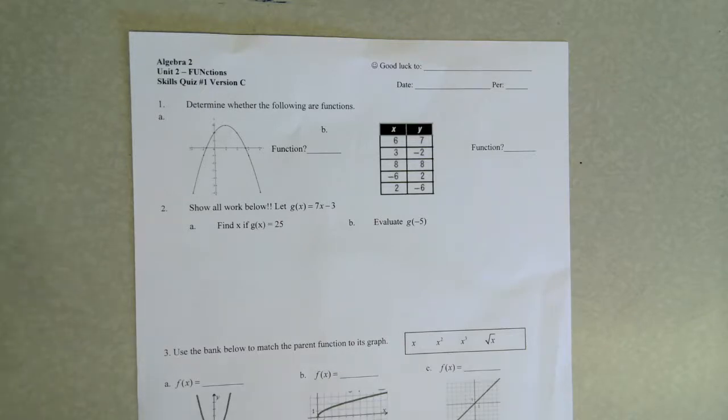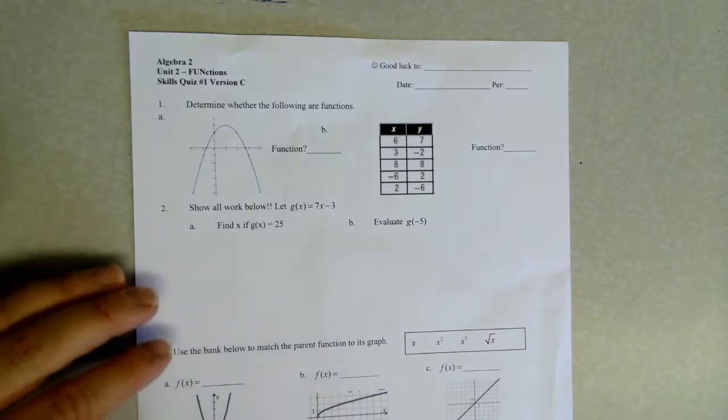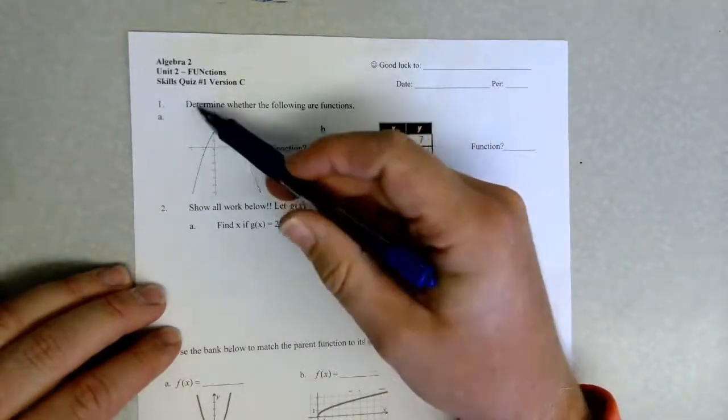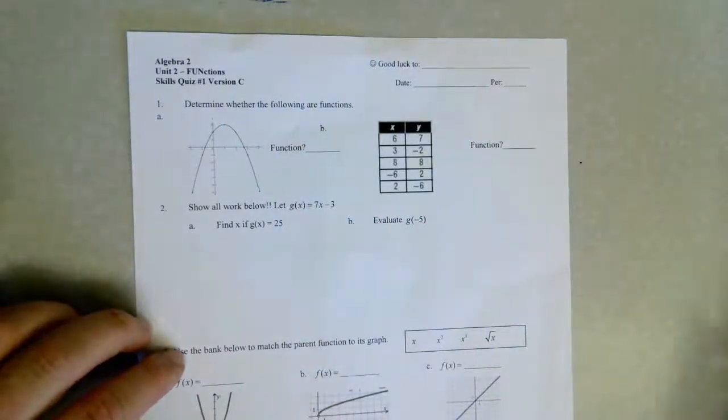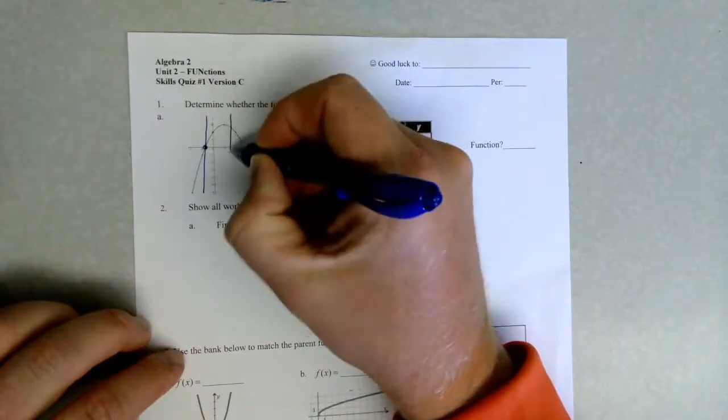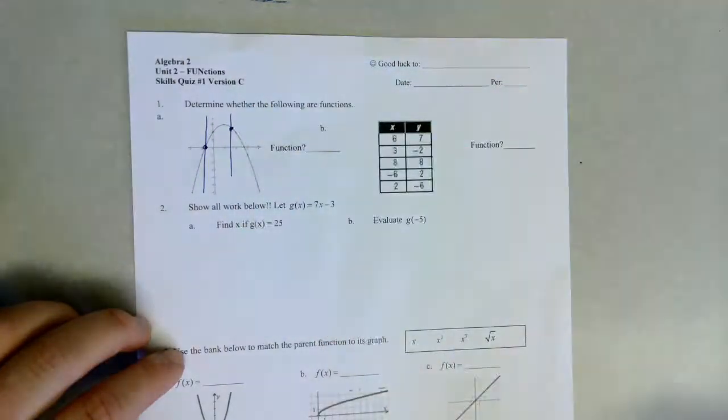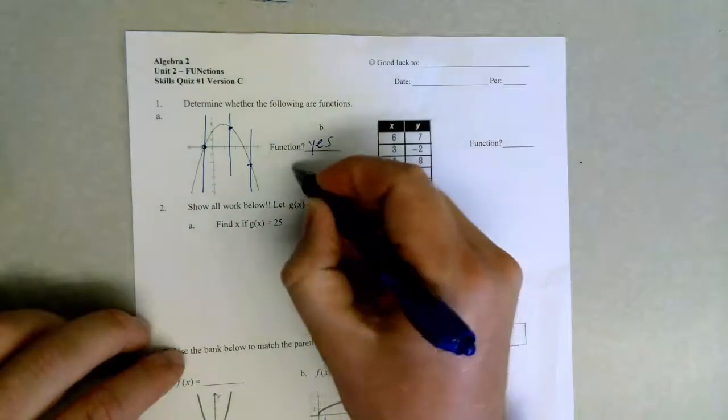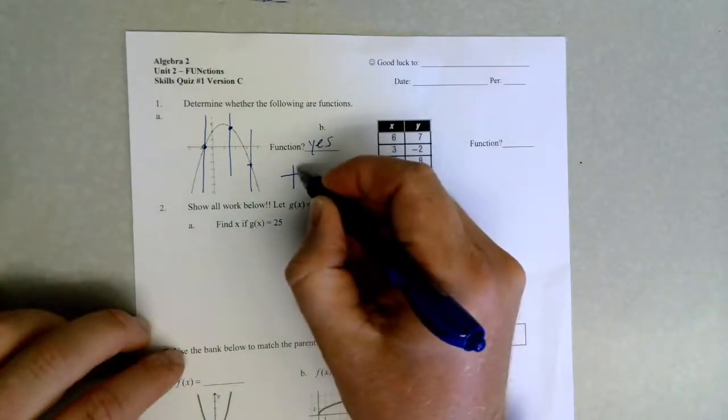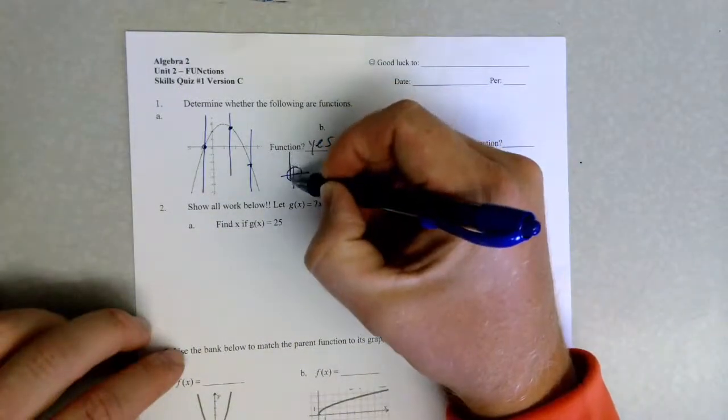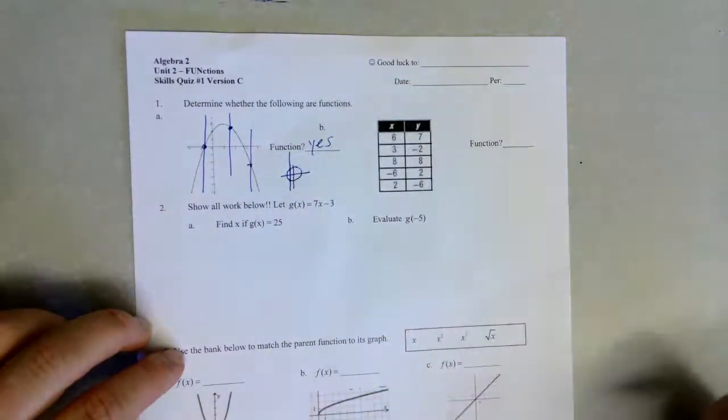The first two questions are asking if given data is a function or not. Sometimes we have data in a graph, and anytime that we have a downwards parabola or an upwards parabola, it's going to be a function because it's going to pass the vertical line test. Draw a vertical line anywhere and if it only touches once, it is definitely a function.